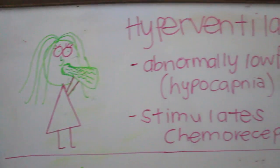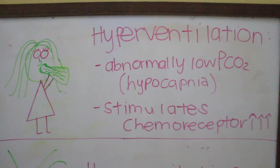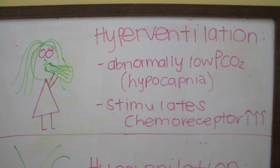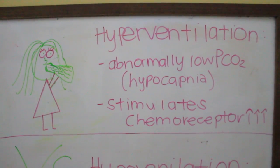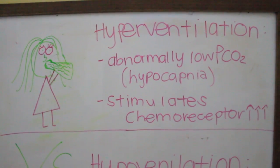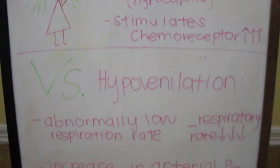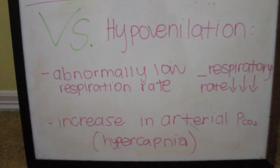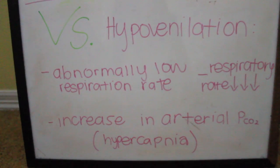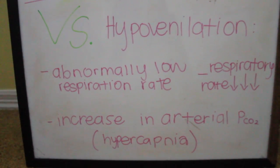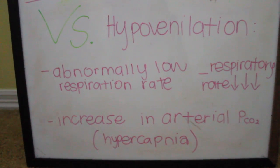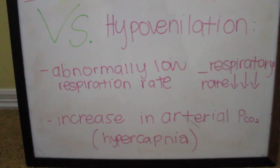Hyperventilation — abnormally low pCO2, which is hypocapnia — stimulates the chemoreceptors, versus hypoventilation, which is an abnormally low respiration rate; it increases the arterial pCO2, known as hypercapnia.